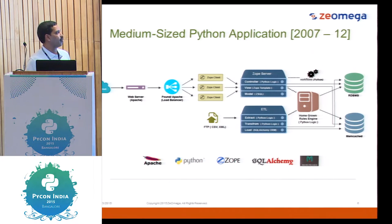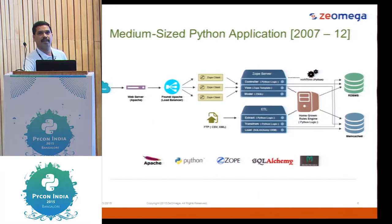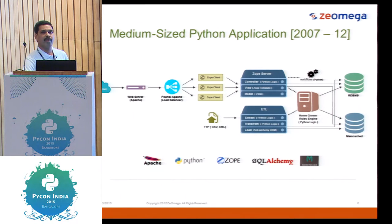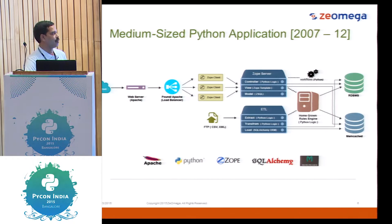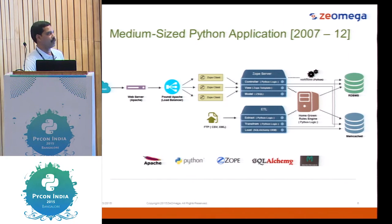We wrote our own workflow in Python and our own rules engine in Python. The rules engine is heavy and required us to support synchronized events, actions, and criteria — the logic is pretty heavy. We extended the same application using memcache so we could serve more requests and more users.